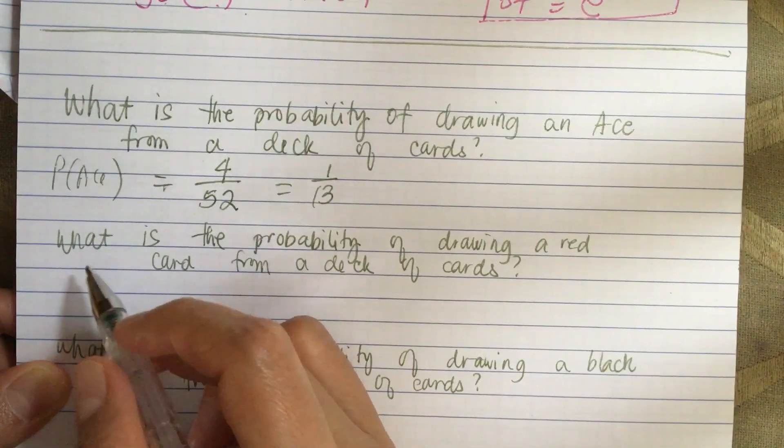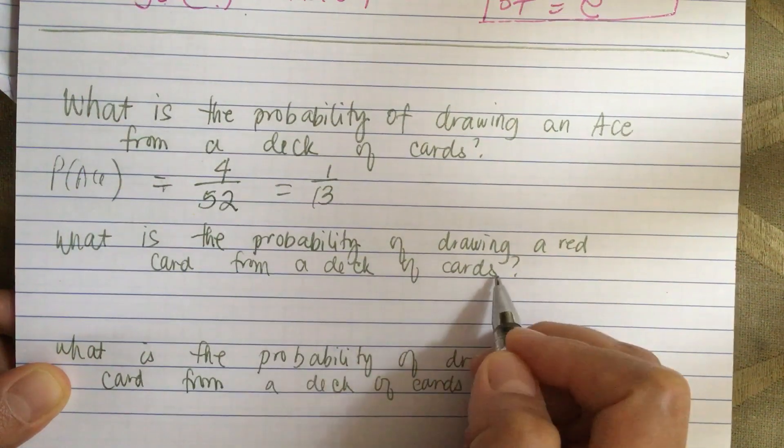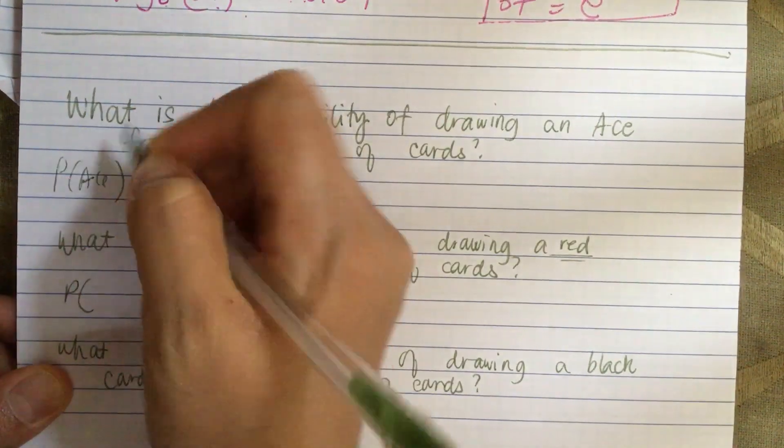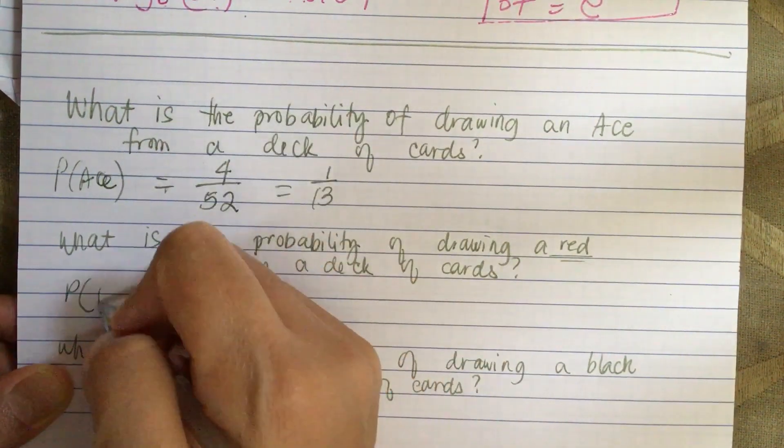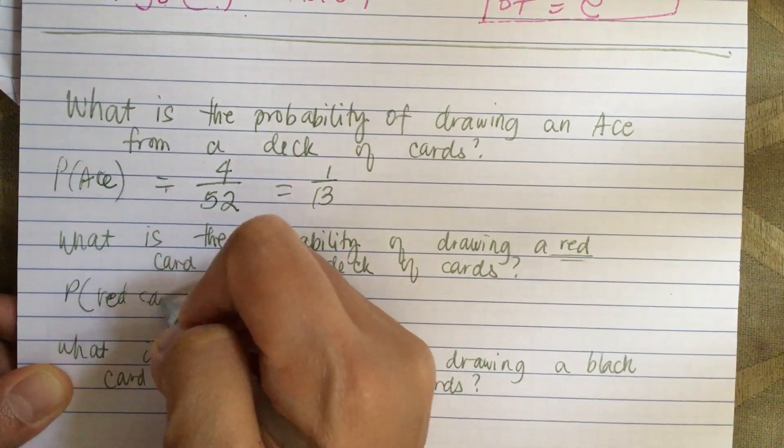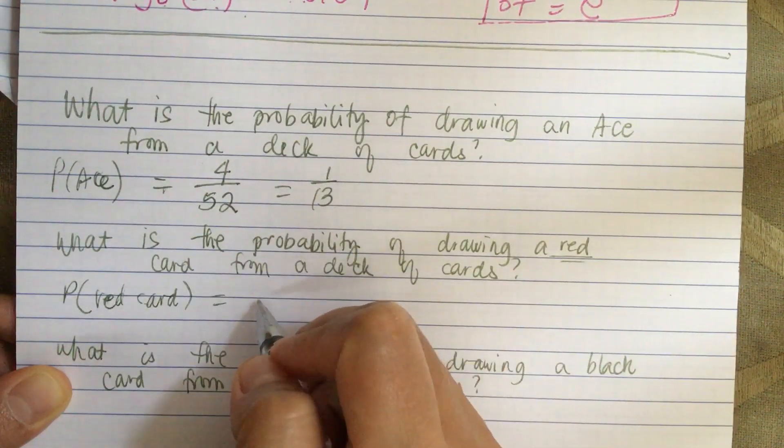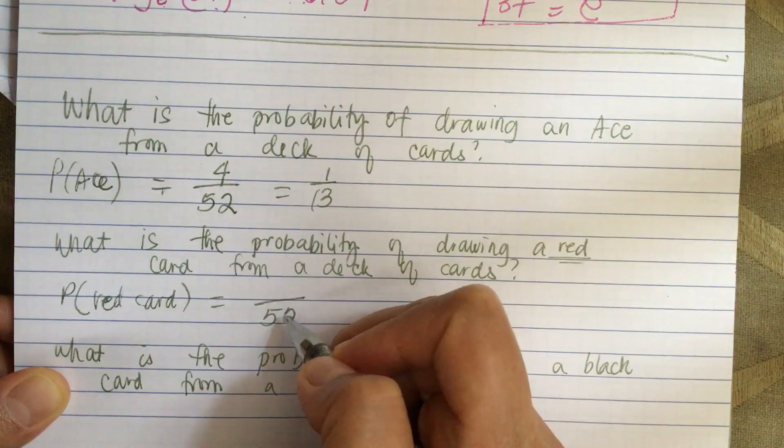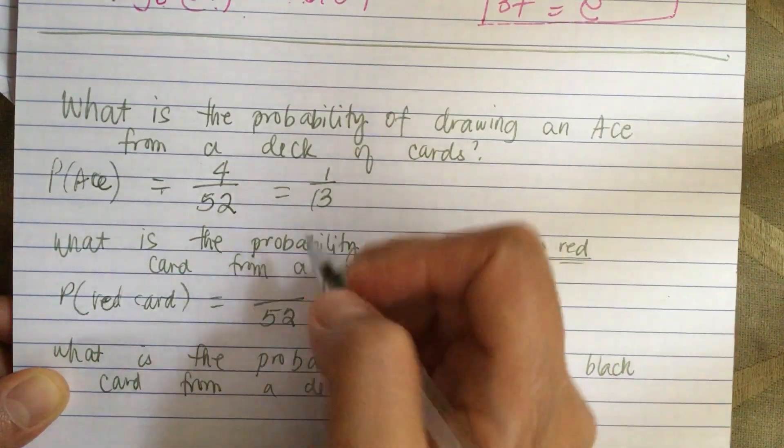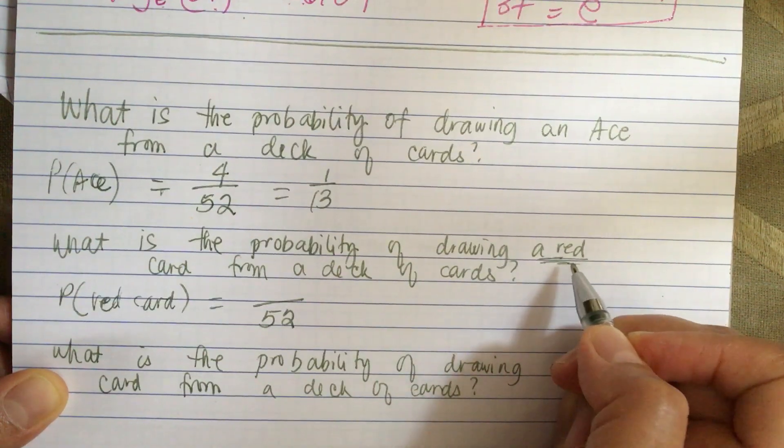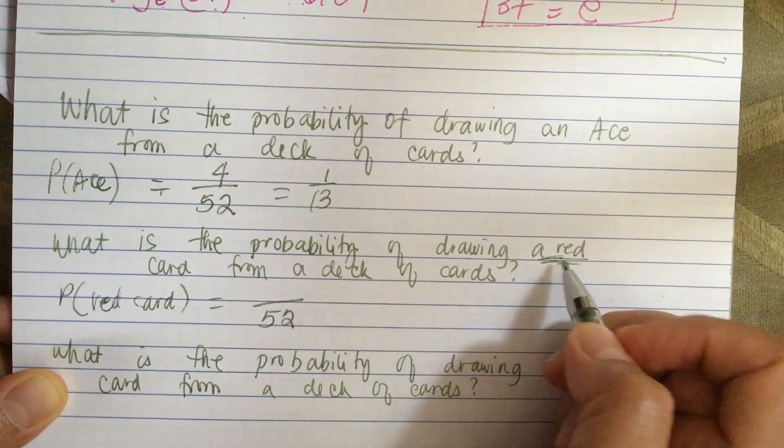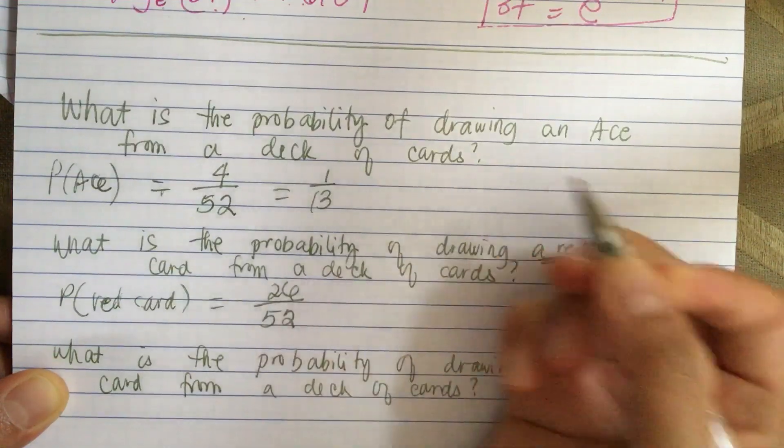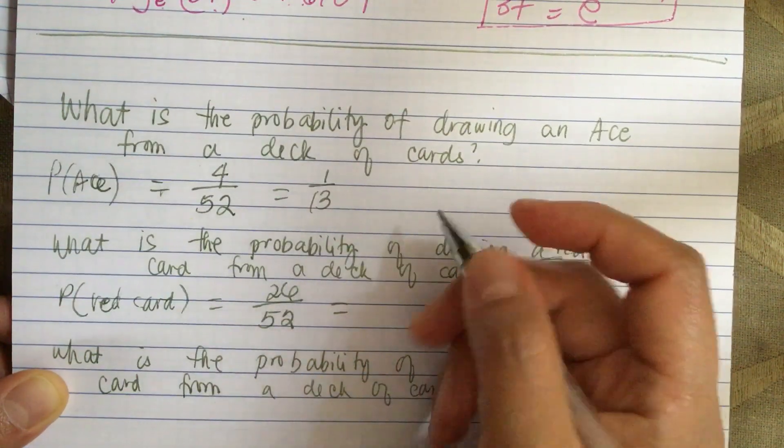Next one: what is the probability of drawing a red card from a deck of cards? The probability of red card - the denominator is 52 because the number of total cases is 52. There are 26 red cards, so 26/52, which reduces to 1/2.